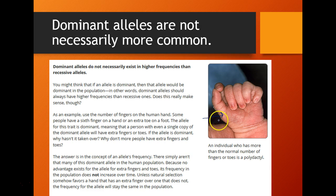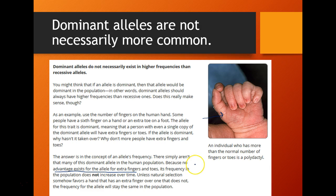The reason the dominant trait for six fingers isn't becoming more common is because it doesn't have any advantage — there's no benefit to having extra fingers and toes. If a gene or trait doesn't make an organism more fit or likely to survive and reproduce, its frequency won't change. Because this trait is neutral, it doesn't provide any advantage, so its frequency actually stays the same over time.